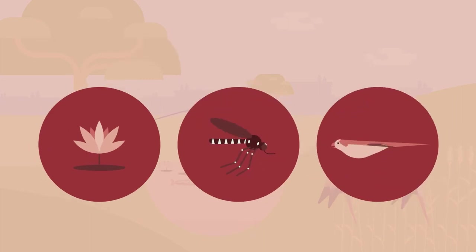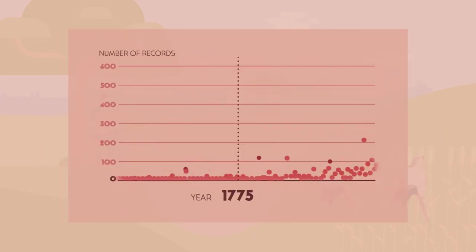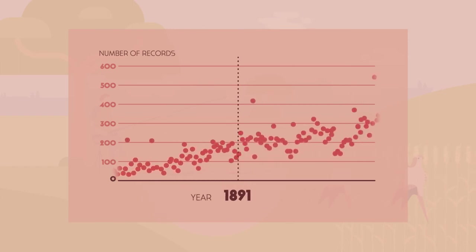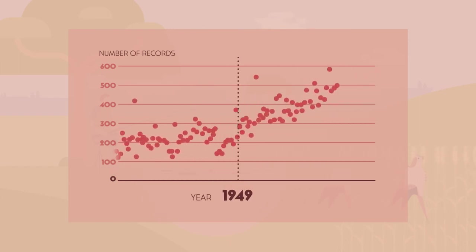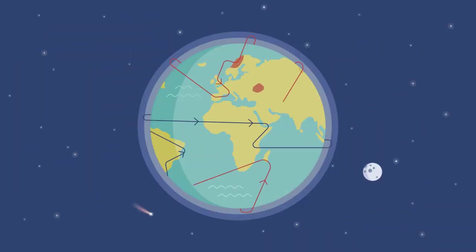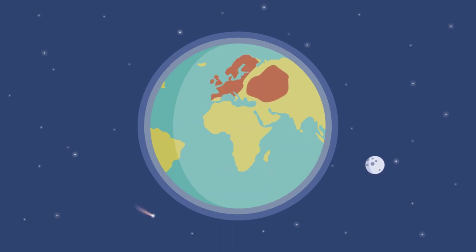The rate at which alien species are being introduced to new regions globally has increased dramatically in the last 200 years and is showing no signs of slowing. Research suggests that the increase in trade and the global connectivity of trade networks play a major part in the introduction of alien species.